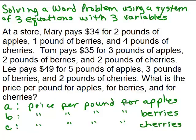So we define three variables. Now if you have three variables, usually you have to have three equations in order to solve it. So let's see if we can make an equation based on the sentences in the problem. What do we know about Mary? She pays $34 for 2 pounds of apples, 1 pound of berries, and 4 pounds of cherries. She's buying 2 pounds of apples, and A is the price for one pound of apple, so she pays 2 times A.